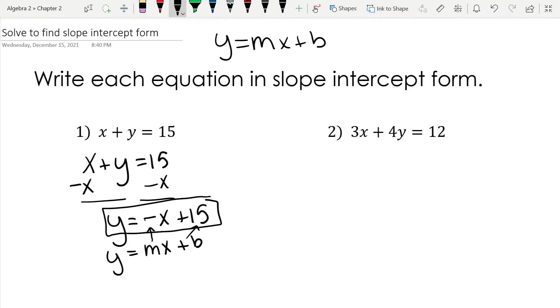Let's look at number two. I like to rewrite them. 3x plus 4y equals 12. Now, once again, we want to get y by itself. So I need to get rid of a positive 3x. The opposite of a positive 3x is a negative 3x. So that's what I'm going to do. I'm going to subtract 3x from both sides of my equal sign.